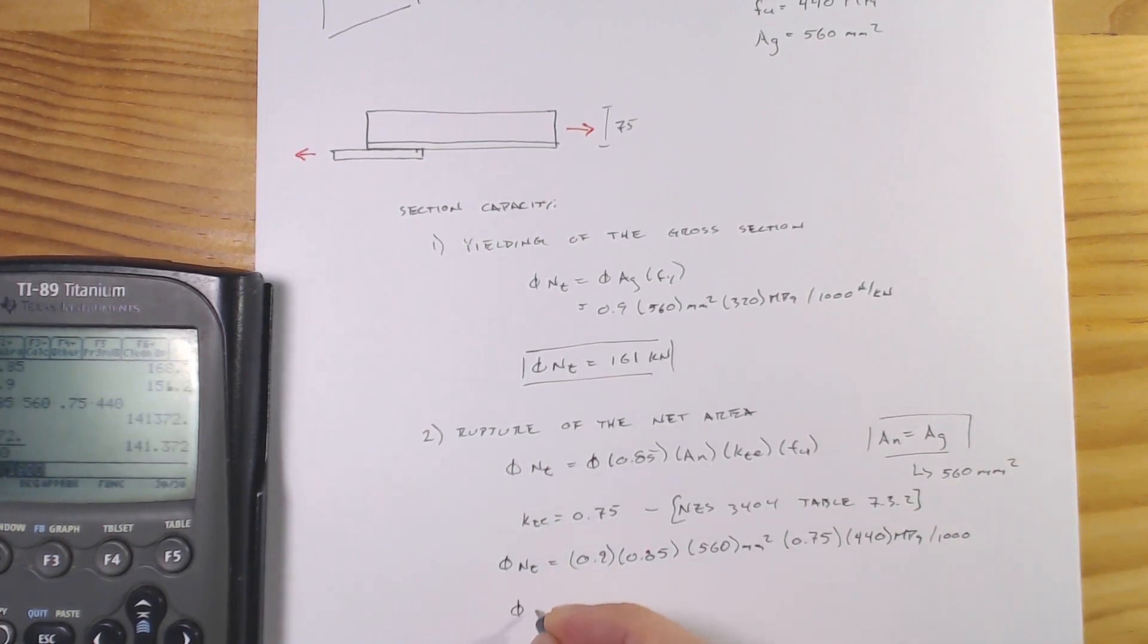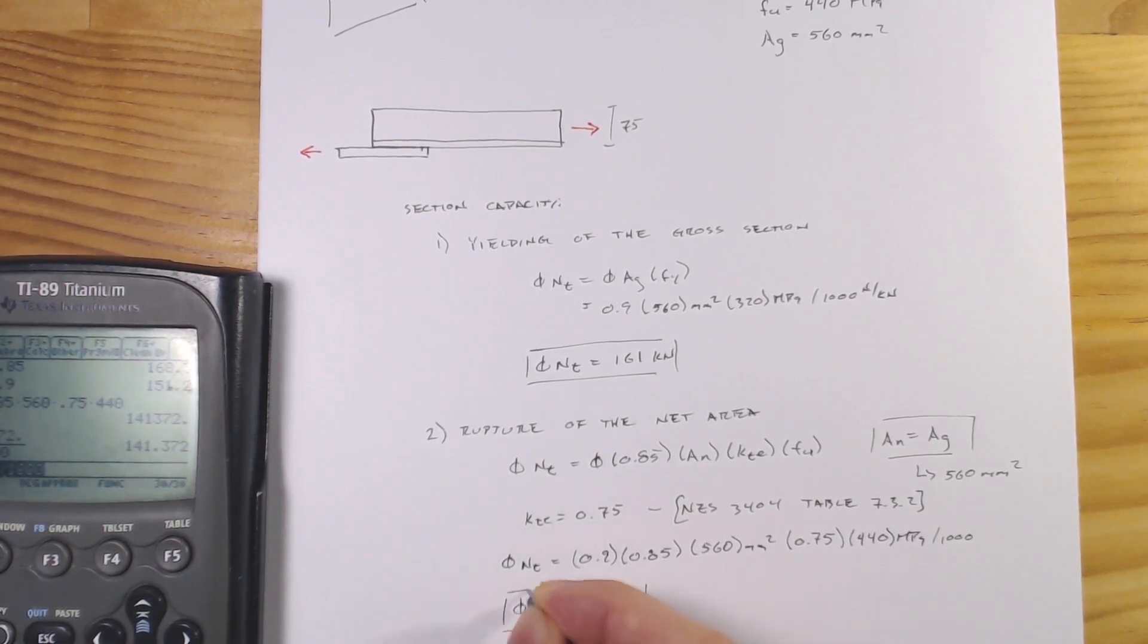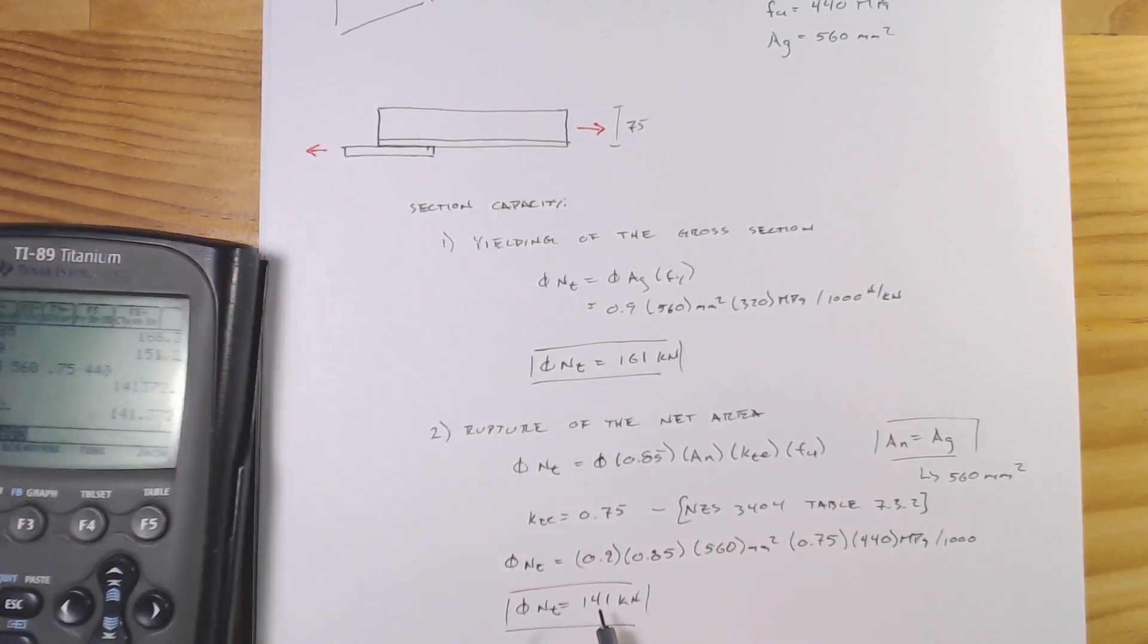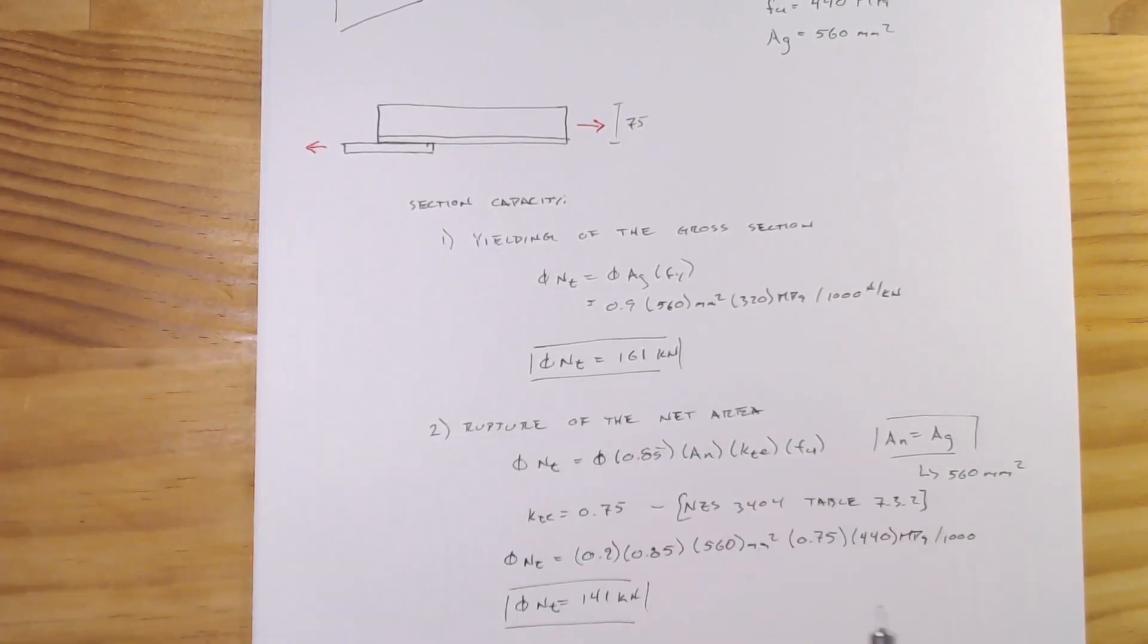We get φNzt equals 141 kilonewtons. Now we look at the two: 141 is smaller than 161 and that is going to be our governing capacity.